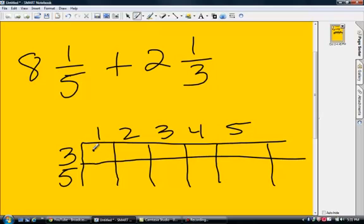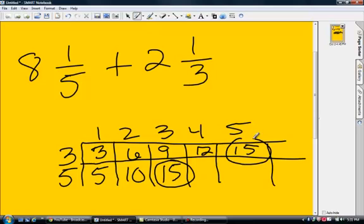So here we've got 3 times 1 is 3, 3 times 2 is 6, 3 times 3 is 9, 3 times 4 is 12, 3 times 5 is 15. 5 times 1 is 5, 5 times 2 is 10, 5 times 3 is 15. This is our first match of 15.